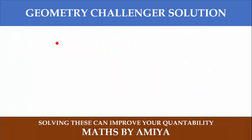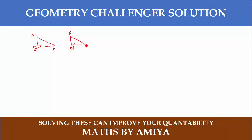Before understanding the formula, the first thing you should understand is the congruency in a right-angle triangle. How are two right-angle triangles congruent? If their hypotenuses — say triangle ABC is congruent to triangle PQR — then if these two triangles are congruent, their hypotenuses are the same.